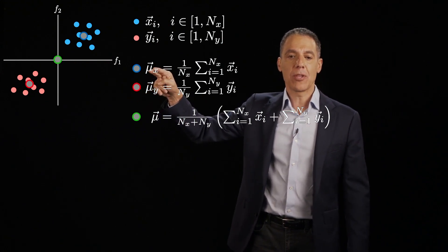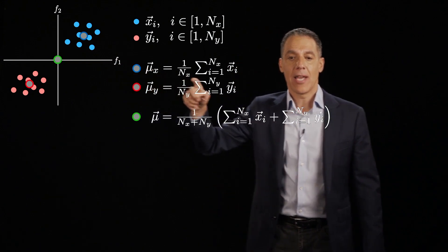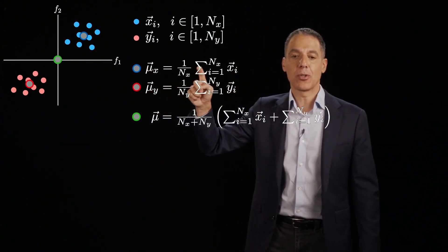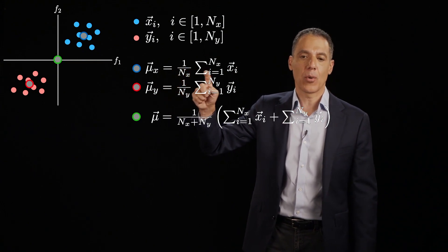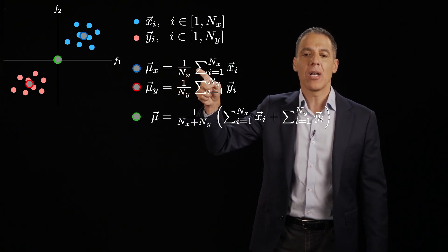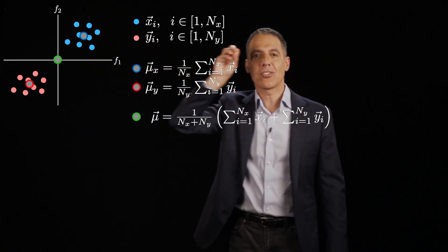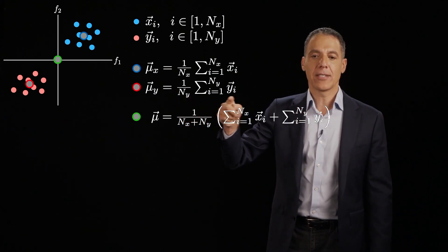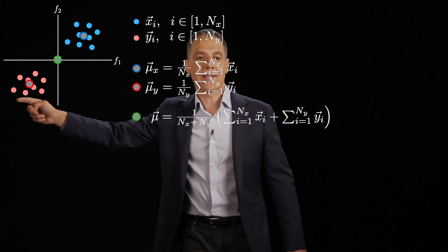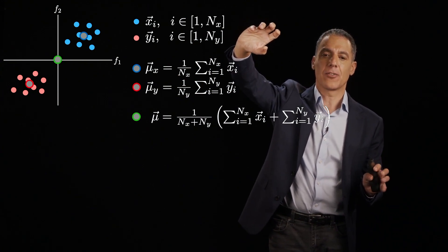Let me define a few terms. I'm going to compute the mean of the first class, the x class, as simply the center of mass of all those blue points. So mu sub x is 1 over nx, the total number of points, times just the sum of all the x sub i's. And that's that little guy right there, just the center of mass. Mu sub y is 1 over ny times the sum of all the y points. That's that guy right there. So that tells me where the center of mass is for my two classes.